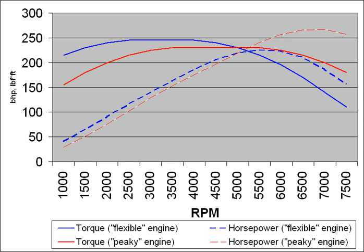Gas turbines operate at extremely high RPM by comparison, and exhibit narrow power bands, and poor throttleability and throttle response.